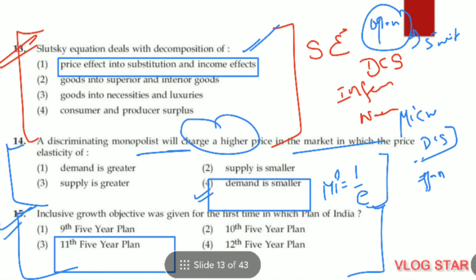Question number 13. The Slutsky equation deals with the decomposition of price effect into substitution effect and income effect. Question number 14. A discriminating monopolist will charge a higher price in the market where the price elasticity of demand is smaller. Lerner's index of monopoly power states M = 1/E — as elasticity increases, monopoly power decreases, and as elasticity decreases, monopoly power increases. So higher price is charged where elasticity is smaller.